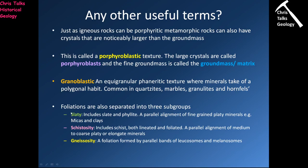When it comes to foliations, slates, schists, and gneisses show very distinct layering and are given their own subclass of foliation. A slate has a slaty cleavage produced by alignment of clay and mica minerals. A schist has schistosity, produced by alignment of mica minerals. A gneiss has gneissosity (or gneissicity), produced by light and dark bands of minerals - like a zebra pattern.